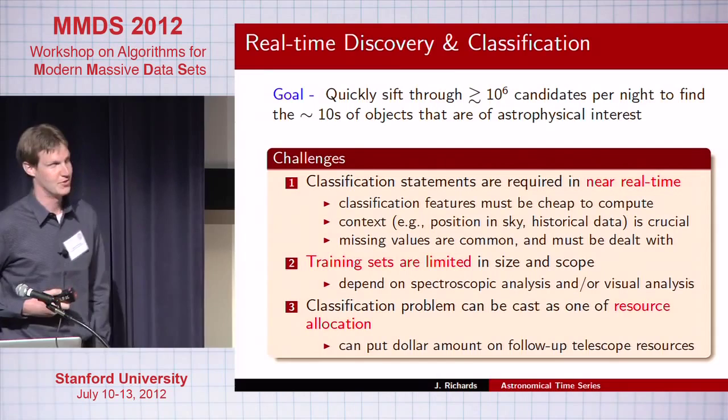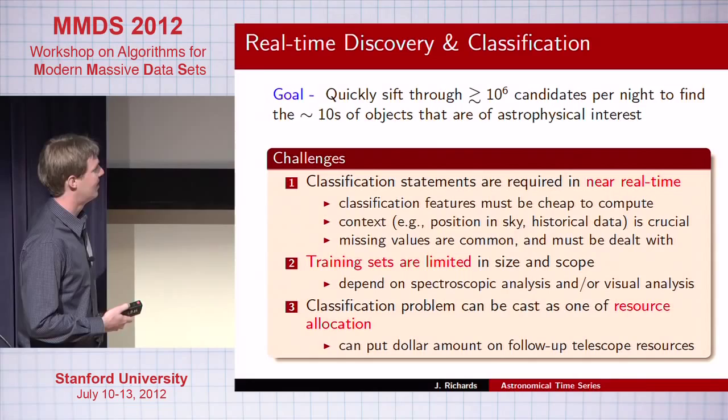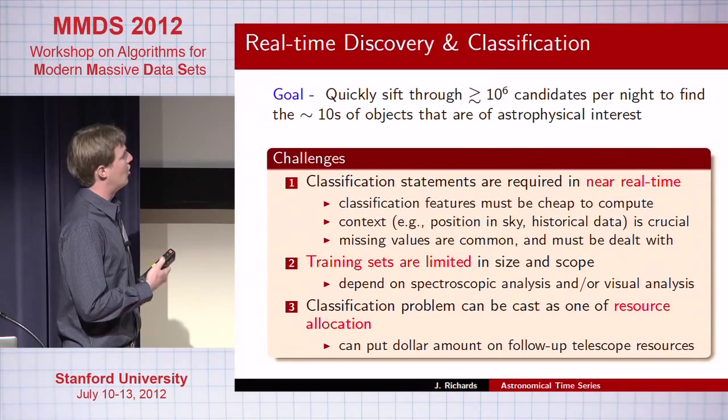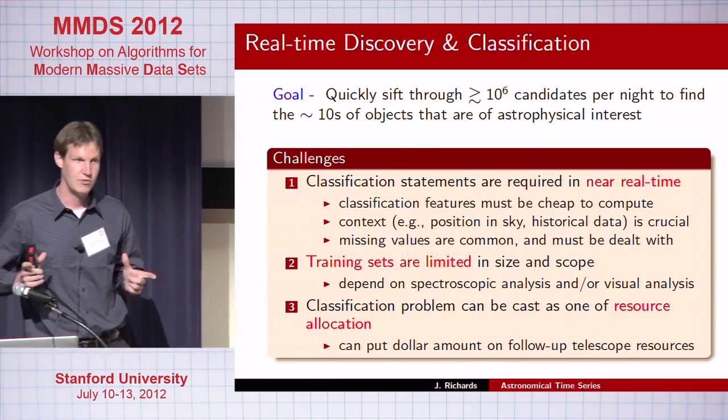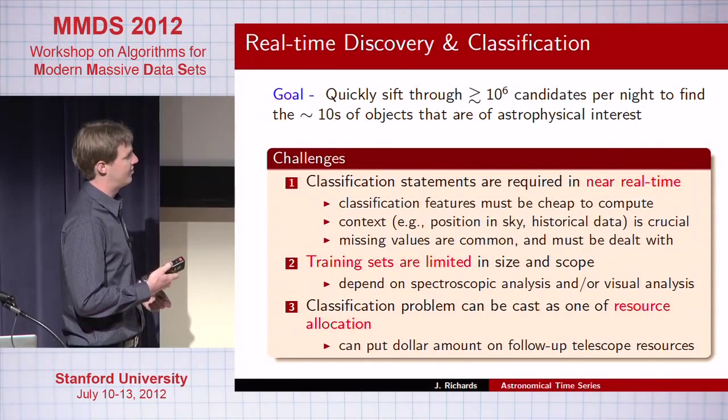In the future, that number will climb several orders of magnitude larger. We need near real-time classification — not the real-time some people are used to, but minutes to hours turnaround time. We need classification features on the two-dimensional images, which are used to produce a time series, and then the time series themselves. Context information is also important: where is it, is it close to a galaxy? Missing values and bad data are extremely common and must be dealt with.